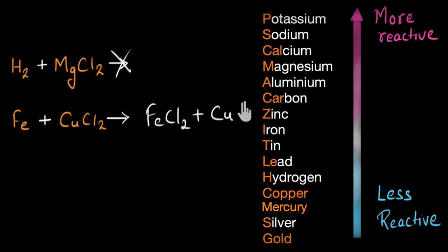So this is how you can use the reactivity series to predict the products of a chemical reaction. But this is not the only use case. One more important use case is that we depend a lot on pure metals like iron and copper. You can find them quite often in your kitchen or electrical appliances or building materials. But you may not find these metals in their pure state in nature. You might find copper in combined state as a compound, like copper chloride, and you will have to extract copper out of this.